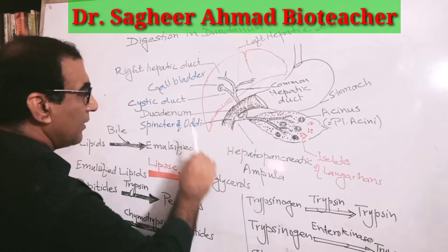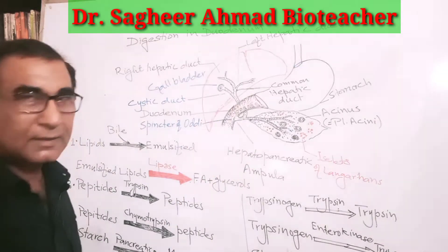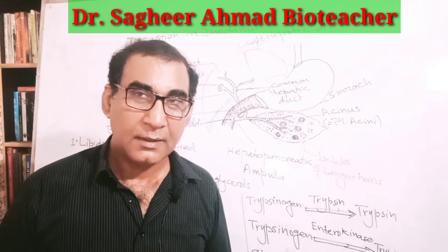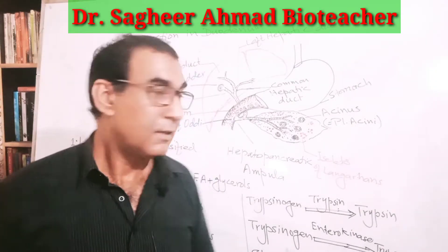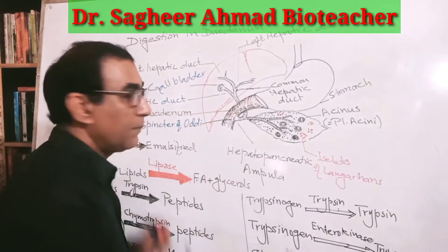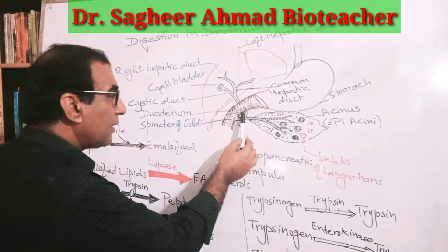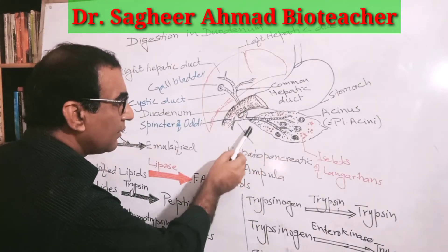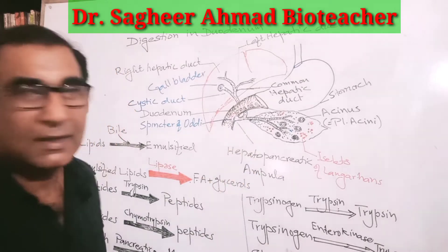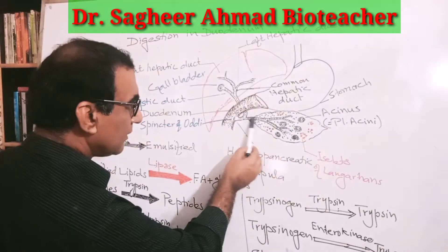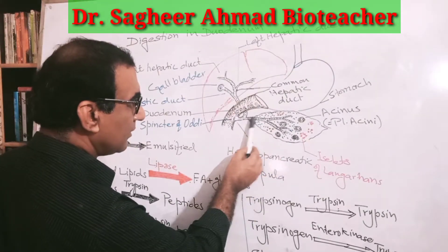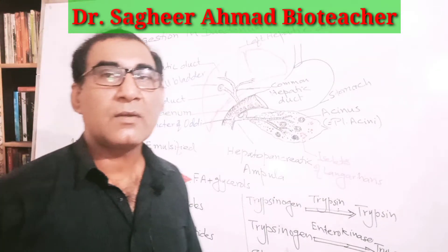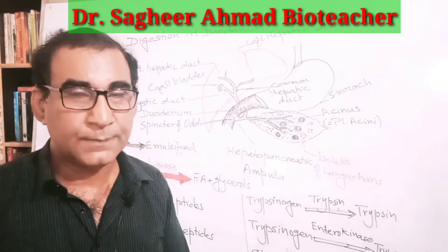This is the common bile duct, which transports bile towards the duodenum. Here it joins another duct known as the pancreatic duct. This whole structure is known as the pancreas, which consists of two parts: the endocrine pancreas and the exocrine pancreas.